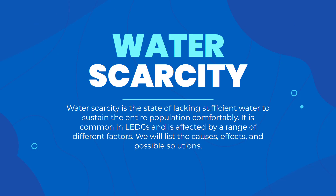Now we're going to talk about water scarcity. Water scarcity is the state of lacking sufficient water to sustain the entire population comfortably. It is common in LEDCs and is affected by a range of different factors. We will list the causes, effects, and possible solutions. Water deficit means there is more water being consumed than can be produced, while water scarcity means a lack of water to sustain the whole population, and is common in places with extreme climates.